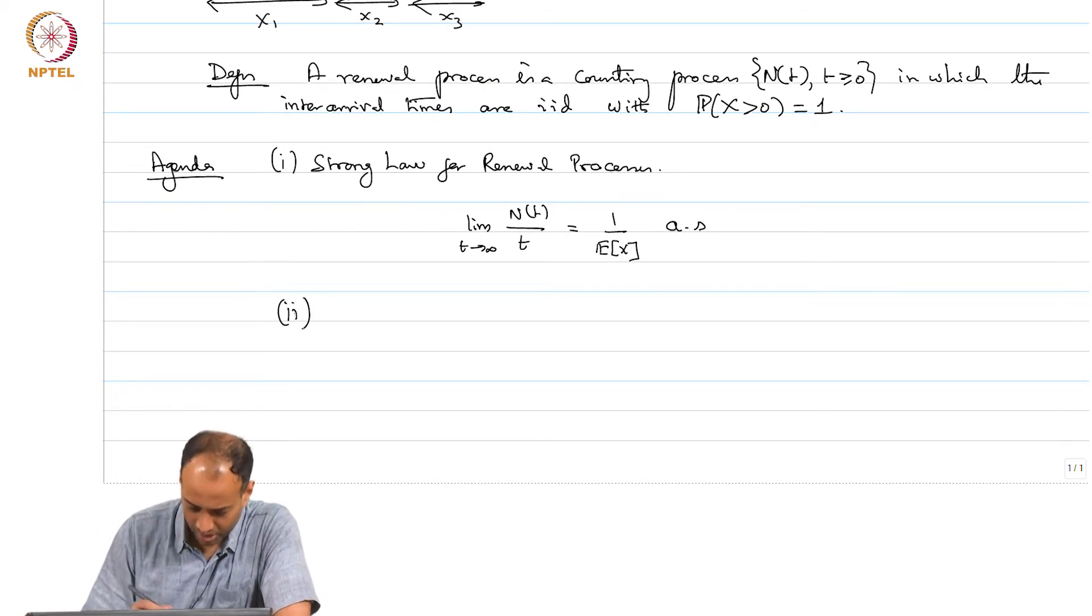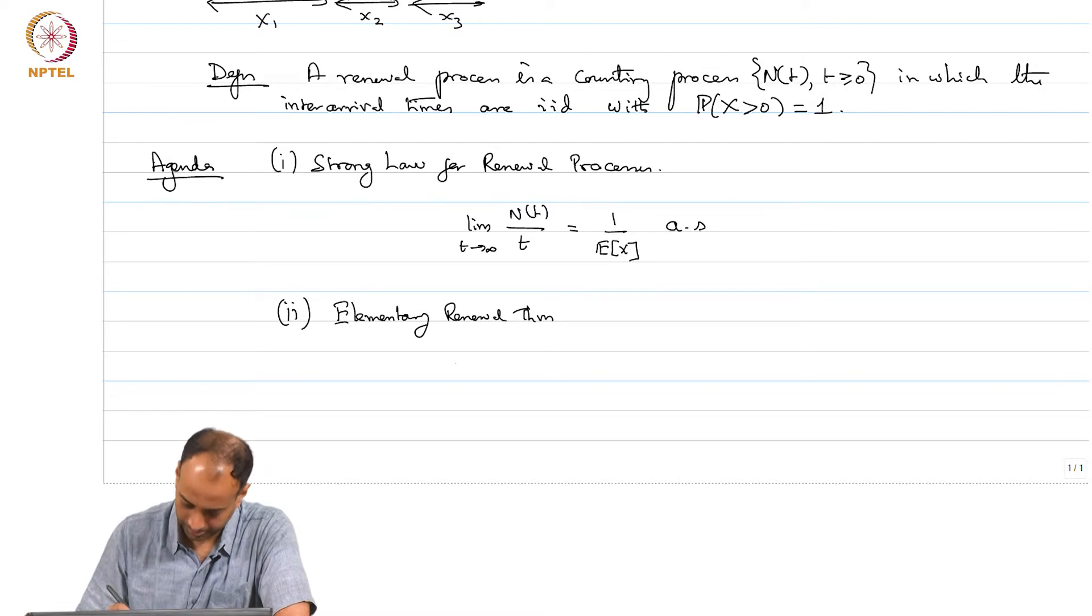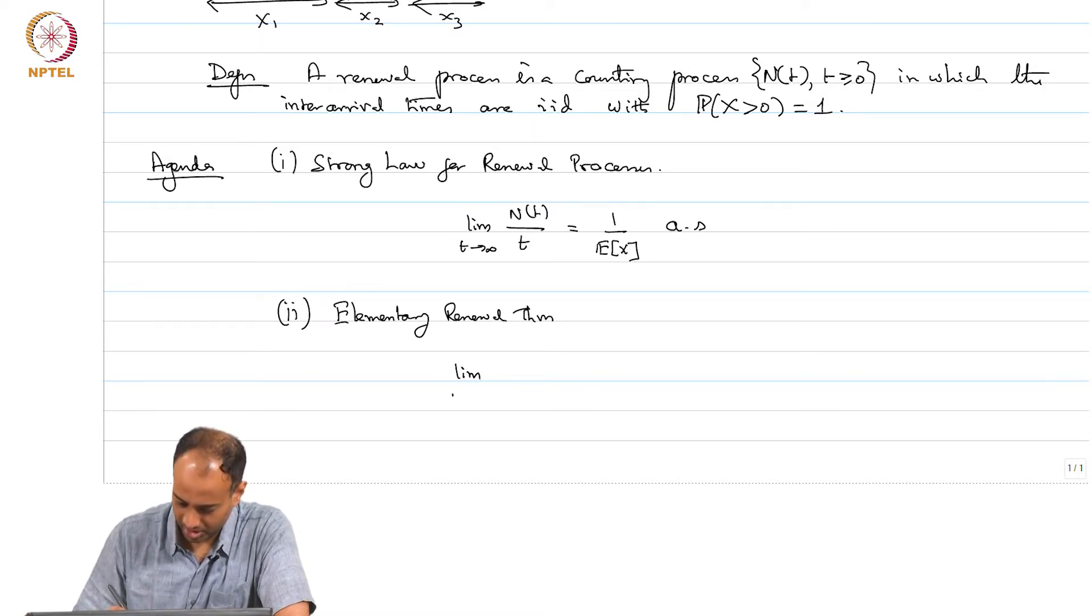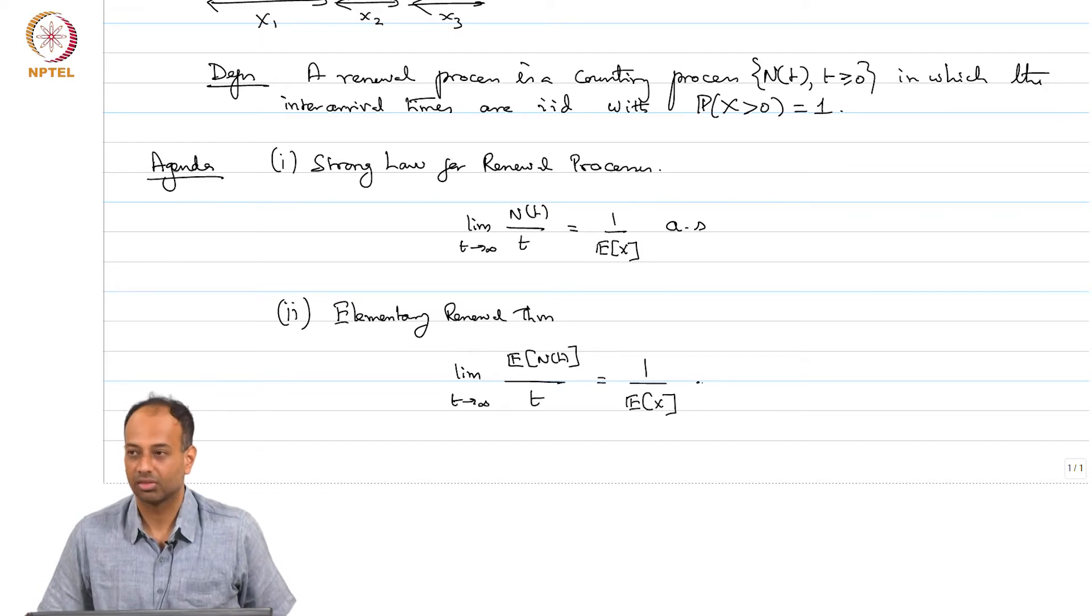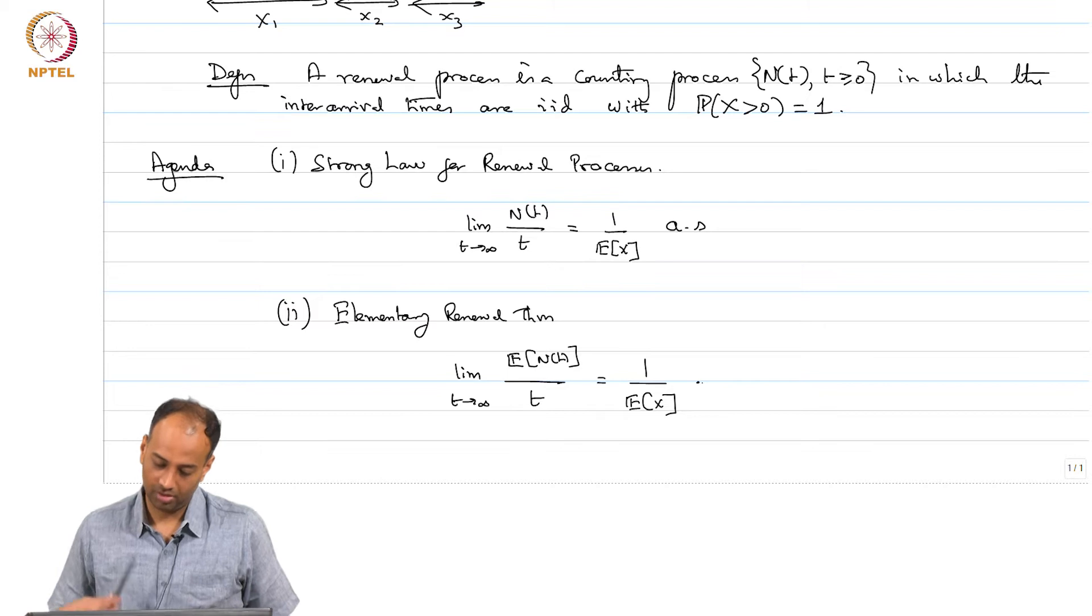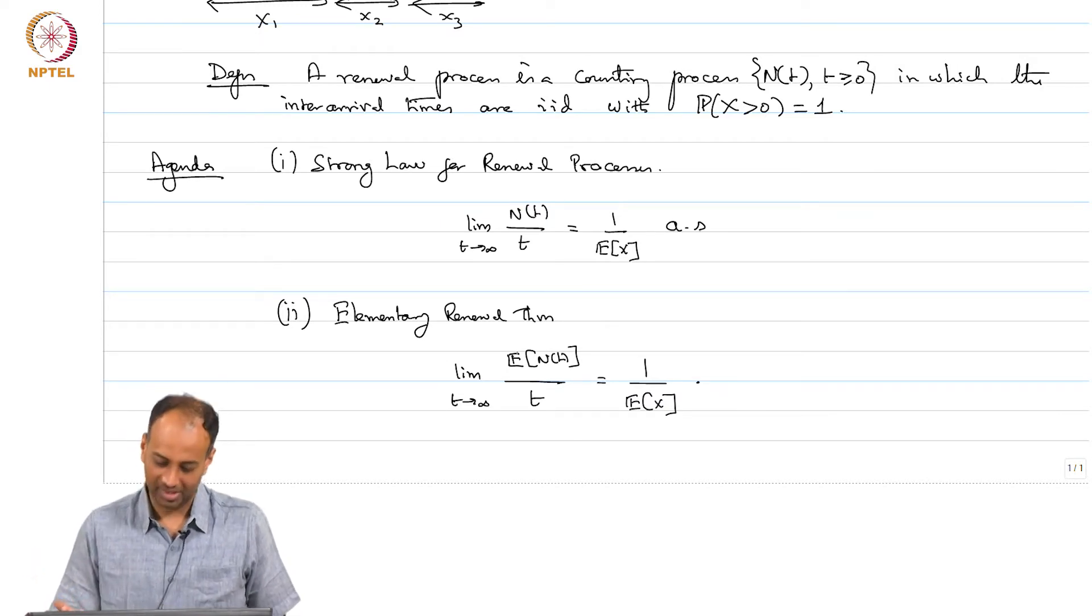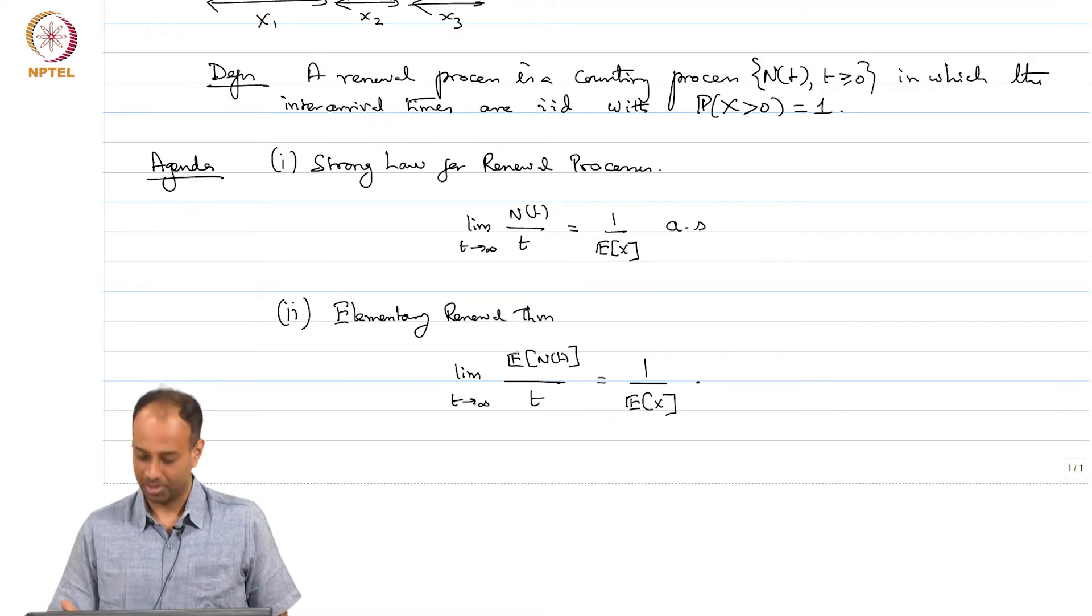Then another very important result we will show about renewal processes is known as elementary renewal theorem which says that limit t tending to infinity expected NT over t is equal to 1 over expected X. The first is a time average, the second involves sending t to infinity, but also involves taking expectation over NT, it is an ensemble average. The answer is the same 1 over expectation of X.